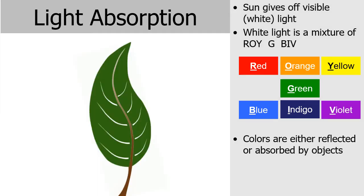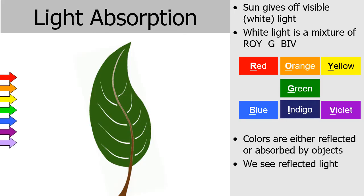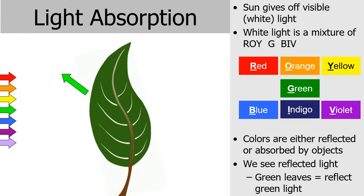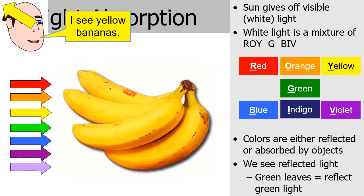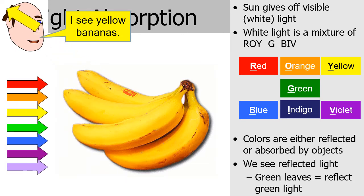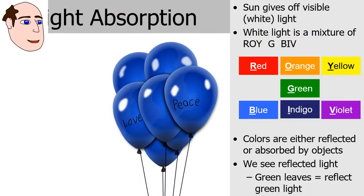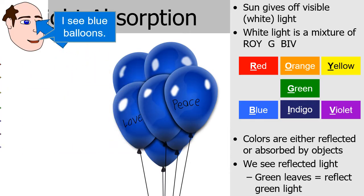Colors of light are either reflected or absorbed by objects. When we shine light onto a leaf, green light is reflected off the leaves while the other colors are absorbed. Bananas appear yellow because yellow light is reflected and the other colors are absorbed. Similarly, blue balloons appear blue because they reflect the blue wavelength while the other colors are absorbed.